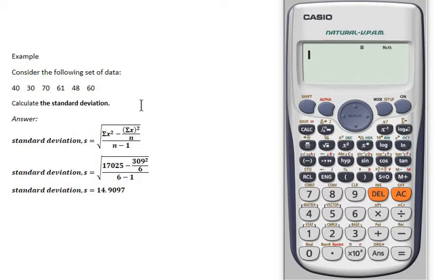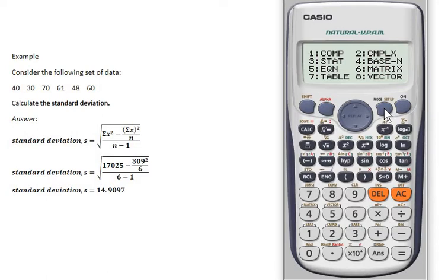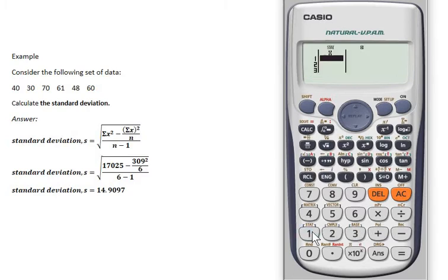To key in the data, press mode, press statistic number 3, choose number 1, and you can key in all the data. Press data 40, press input to save the data, and repeat the same process for the other data values.